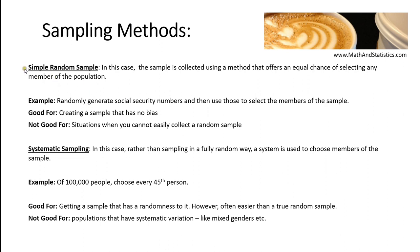Probably the easiest one to envision, but sometimes the most expensive in reality, is a simple random sample. In this case, you're collecting your sample using a method that gives an equal chance of selecting any of the members of your entire population. If your population is every single person in the United States of America, an easy way to randomly sample from that population is to randomly generate social security numbers and then use those numbers to randomly select members from that population. Random sampling is great for eliminating bias completely if you don't want to affect your sample in any way.